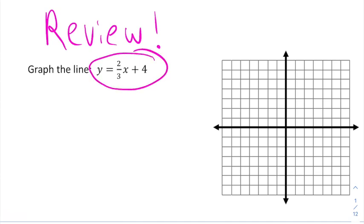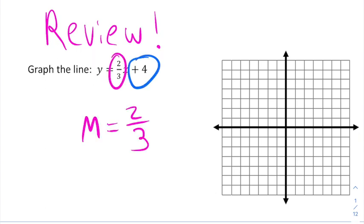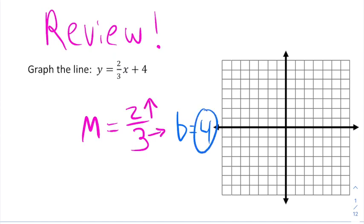Remember if you're given a line in slope-intercept form, you can take the slope and the y-intercept and use those to graph. A slope of two-thirds means go up two and right three, while a y-intercept of four means to start at four on the y-axis. We use the slope to give us a second point, and then we can find other points and connect the dots. This graphing skill is going to be essential to being successful in this new lesson.